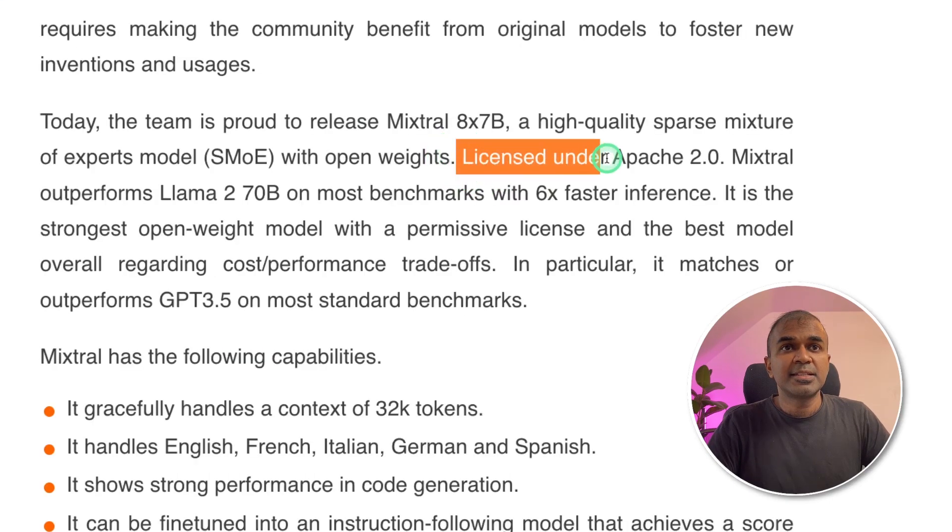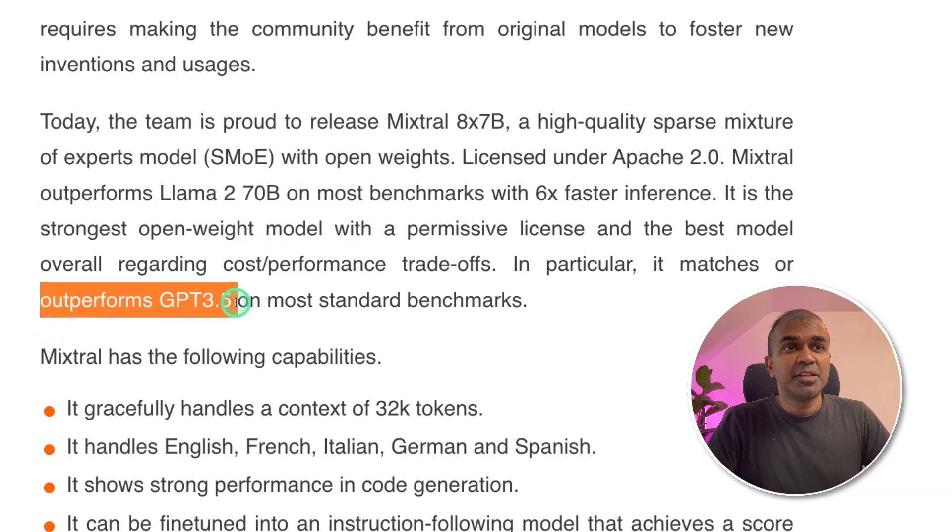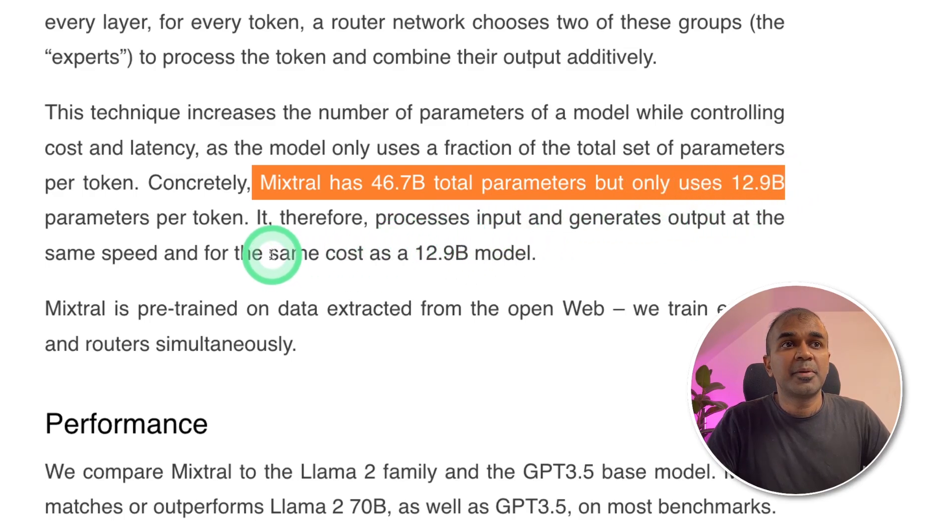This is licensed under Apache 2 and it outperforms Llama 2 70 billion parameter model and also outperforms GPT-3.5 on most of standard benchmarks. The Mixtral has 46.7 billion total parameters, but uses only 12.9 billion parameters. This is because of the mixture of experts. It doesn't use the whole large language model. It chooses which expert to use for a certain request.